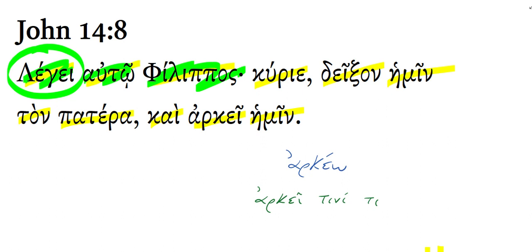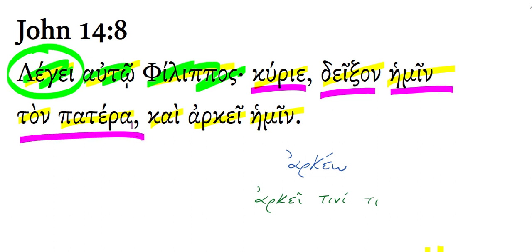And he begins with this vocative: 'Lord' — kurie. And Philip goes on to say, 'Show to us the Father' — show us the Father.